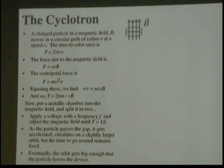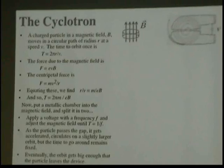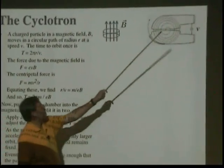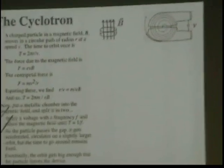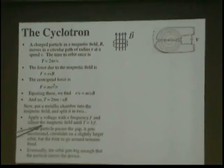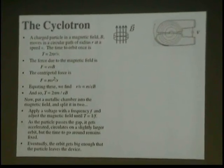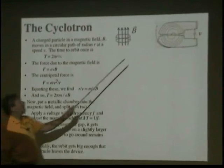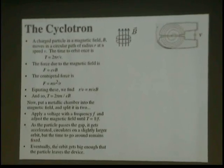Let's put a metallic chamber into our magnetic field and split it in two. This will be sitting in a magnet — magnetic field put on its side. Split it in two, apply a voltage at a frequency proportionate to the revolution period. As the particle passes the gap, it gets accelerated, going into a slightly larger orbit as you see here.